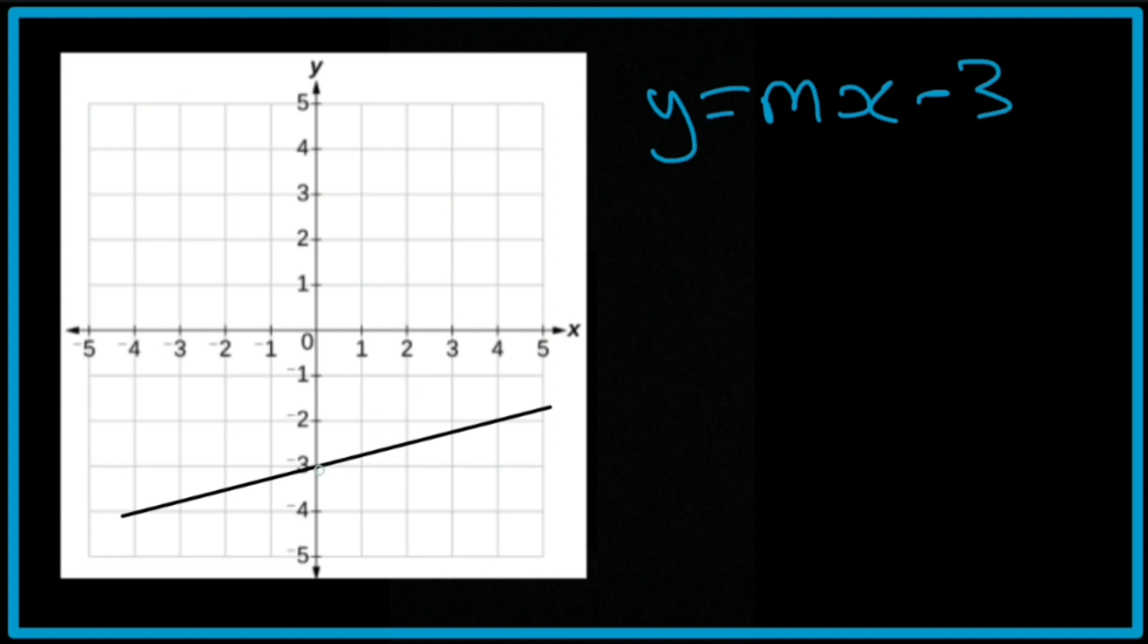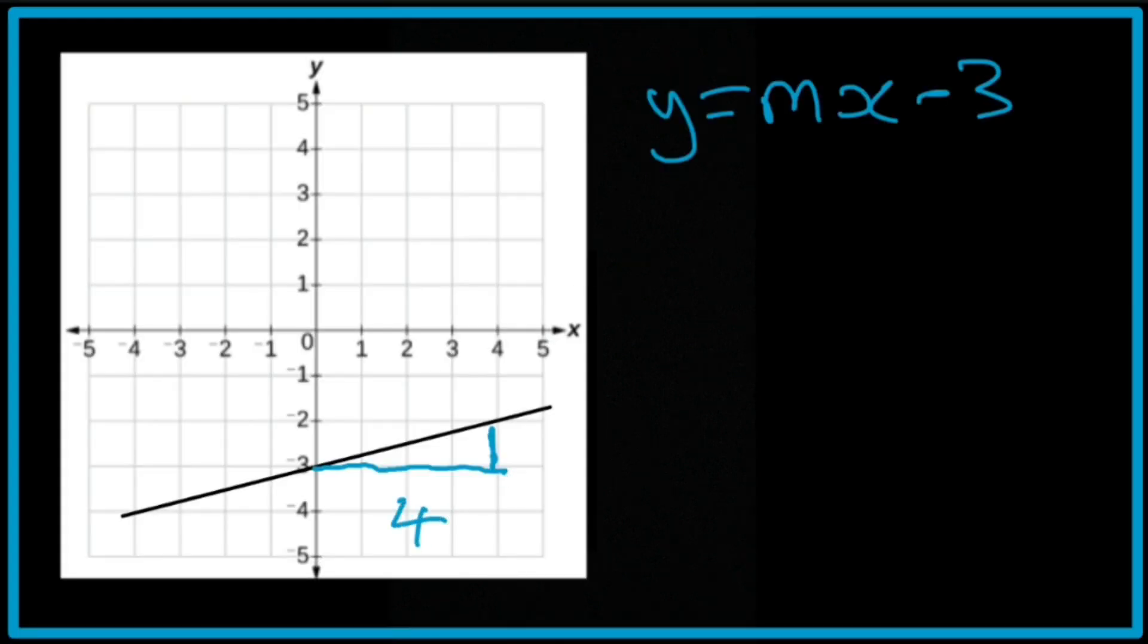Use the rise-run method now. So I'll go along by 1, 2, 3, 4, and then up by 1. The rise is 1. So this time it's going to be 1 over 4, which stays as a fraction.